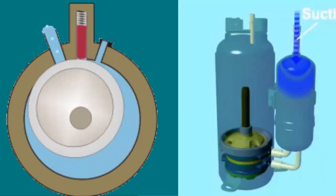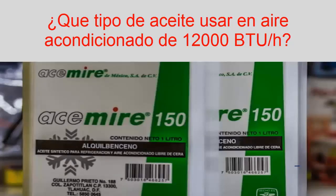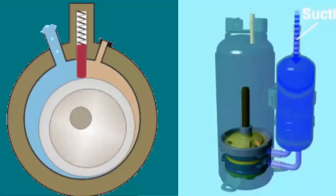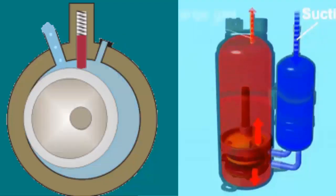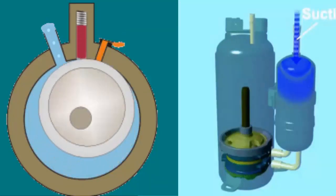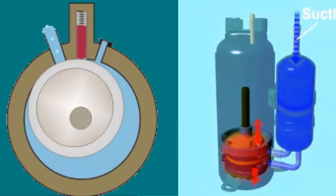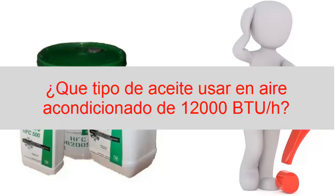Now, it's time to answer the question: what type of oil does the rotary compressor in a 12,000 BTUs per hour air conditioning unit use? Logically, the characteristics of the lubricant will depend on the compressor manufacturer. However, in many cases, we are not aware of the machine's technical specifications, and as specialized technicians, we must perform an oil change in the compressor. So, the question arises again: what oil should we use when we are not aware of the compressor's technical specifications and need to perform maintenance by changing the old lubricant?